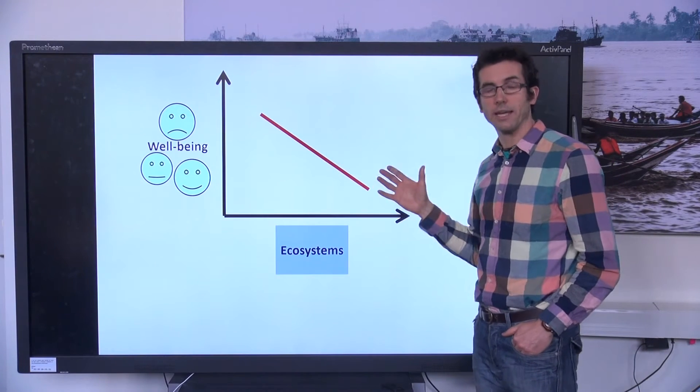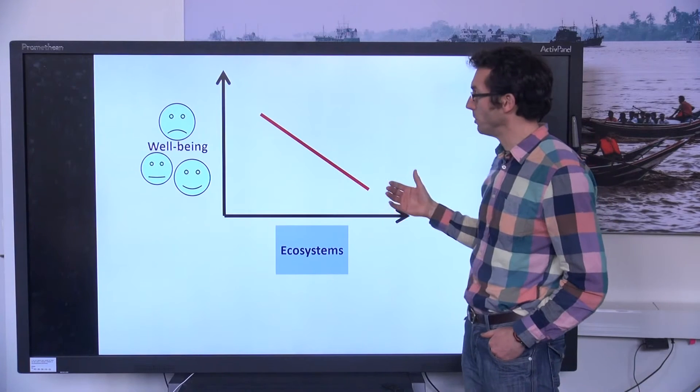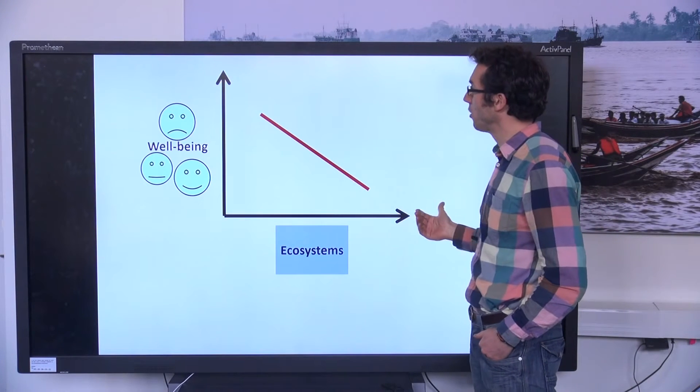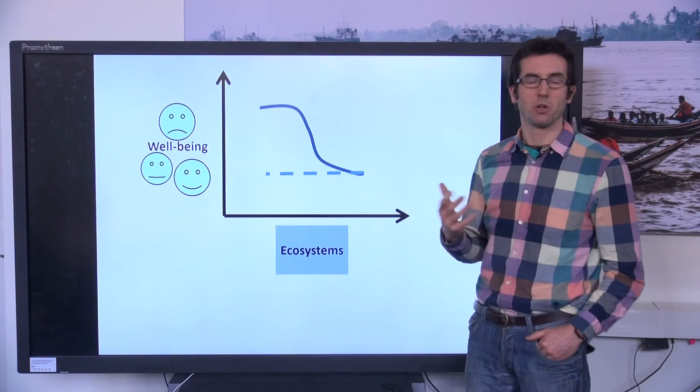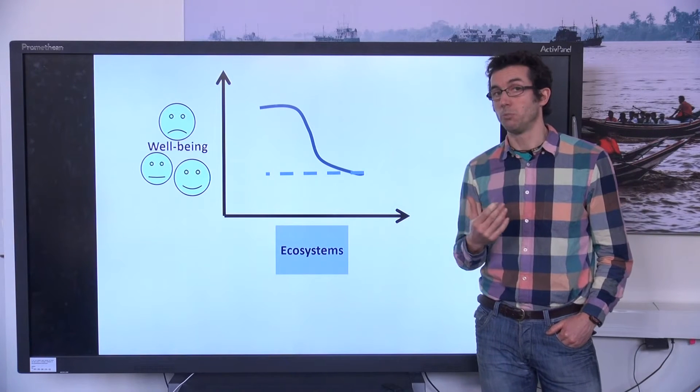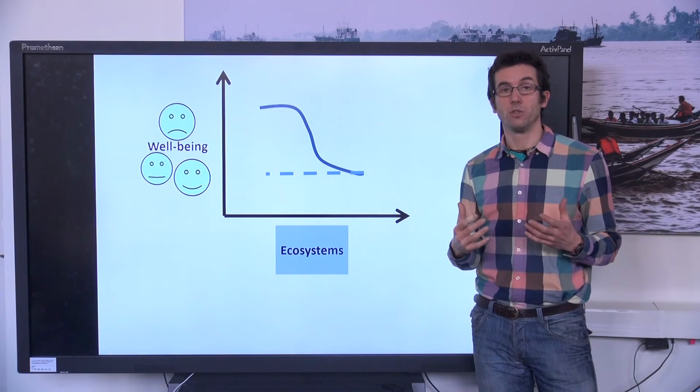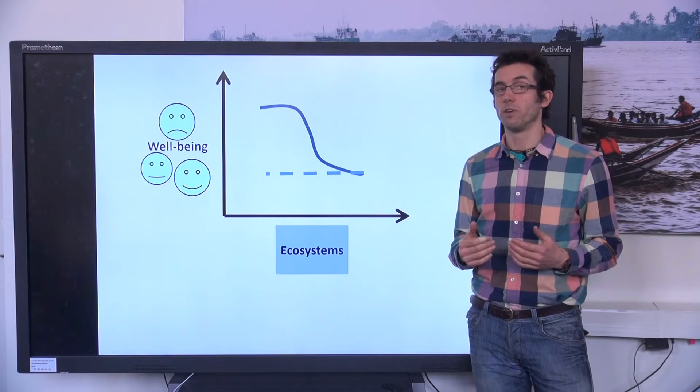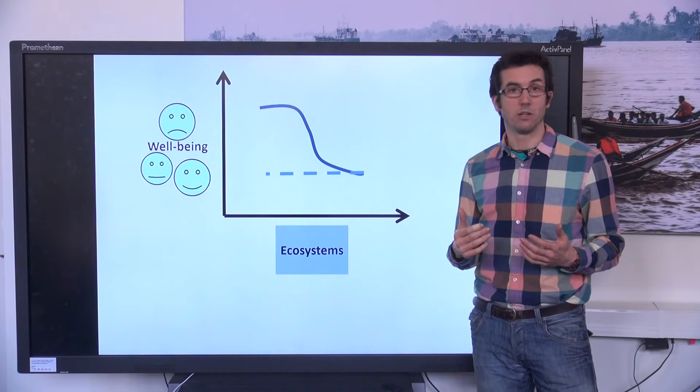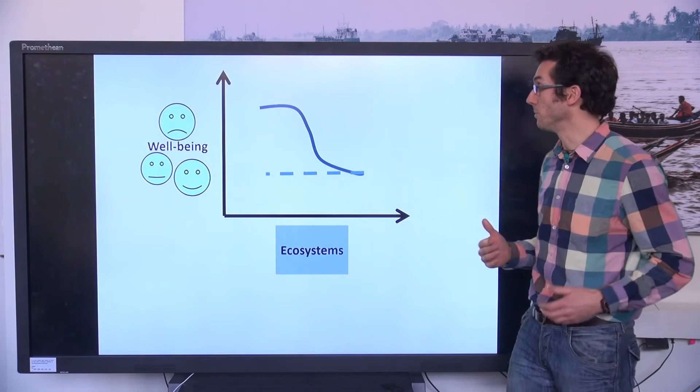Now, these are all straight lines, but obviously the relationship between ecosystems and well-being is actually really complex, and we might expect much more complex dynamics. But the important point is that relationship is crucial for incentives for conservation or for opportunities of poverty alleviation from ecosystem service management.